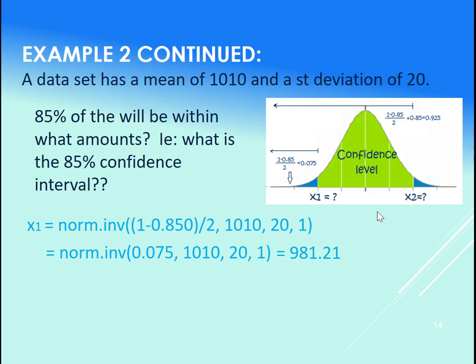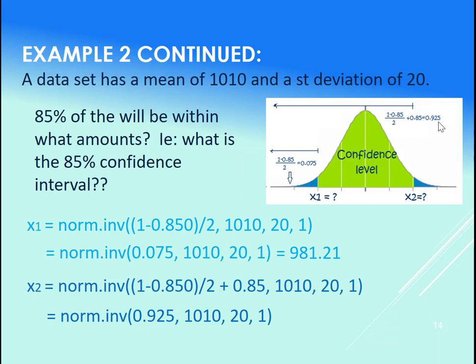And for the upper one here, again, you could do this whole calculation just as it is in the NORM.INV call within it. Just be careful of your brackets. Or, you could just go, I know that area to the left of X2 here, this whole thing is 92.5%, so you could just plug that in instead. And that will actually give us 1038.79, so let's go see about getting that in Excel.